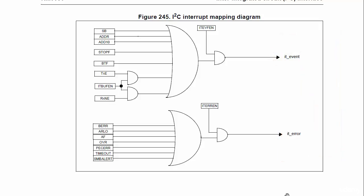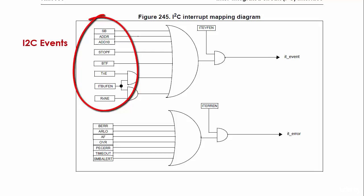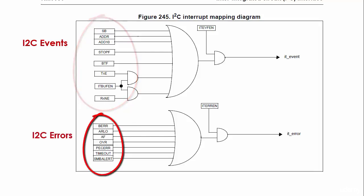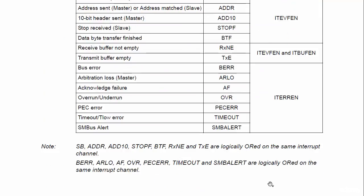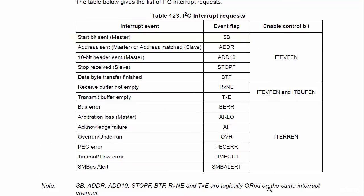Unlike SPI, I2C has a separate IRQ line for interrupting the processor in the case of errors. Here is a table describing the different events and errors which can occur in I2C communication. SB means start bit sent from the master, or start condition generated — applicable only to the master. ADDR means address sent event, or address match successful event in the case of a slave. These events are captured as flags in the status register of I2C.